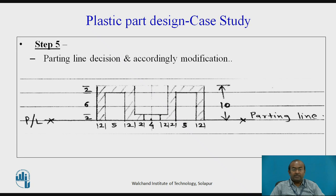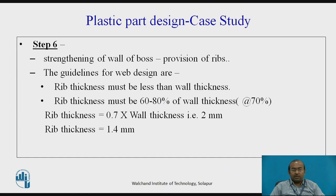Parting line decision and modifications have to be done accordingly. For the parting line, we can observe that the bottom-most part surface is considered. Considering the 4 mm hole at the center to accommodate the screw, the geometry has been modified with uniform 2 mm thickness. In further steps, strengthening of the wall of the BOSS requires providing ribs.